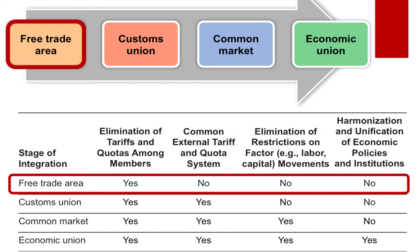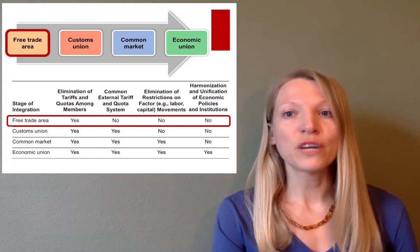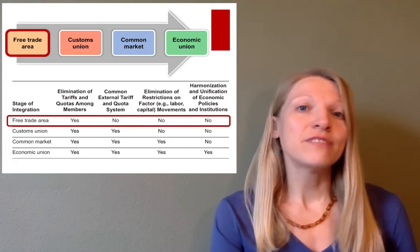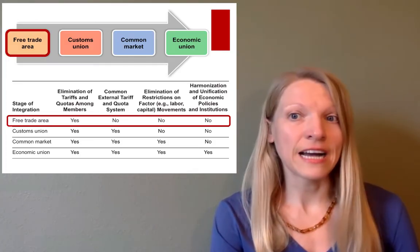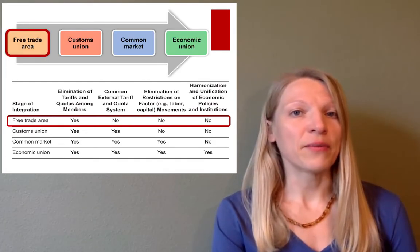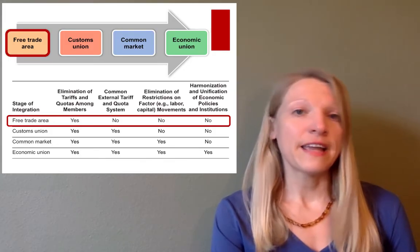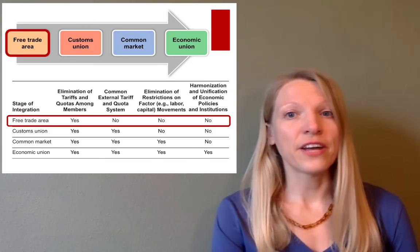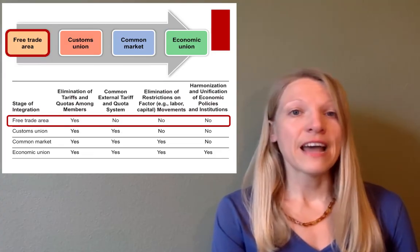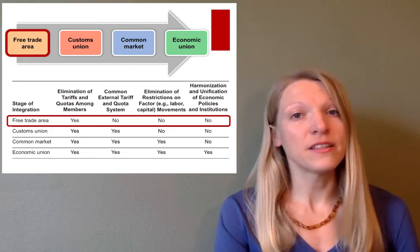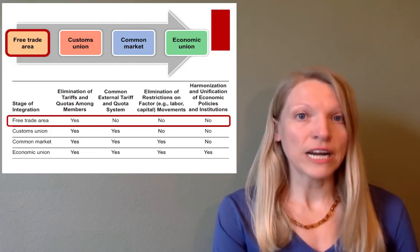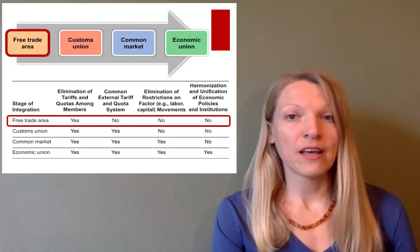Member countries of the free trade area agree to eliminate tariffs and quotas. If members of the free trade area agreement have different tariffs and trade restrictions for countries outside of the free trade area agreement, there is a risk that imports will enter the free trade area through the country that has the lowest external tariffs and the most lenient trade restrictions.